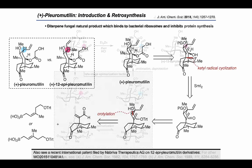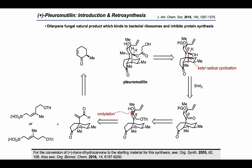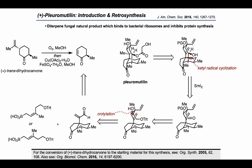Returning to the Reisman retrosynthetic analysis again, let's see how they finished simplifying their intermediate. They proposed that the six-membered ring at the core of their intermediate might arise from an alpha-methylated cyclohexenone, which it turns out can be accessed through a known procedure starting from trans-dihydrocarvone. So let's check out the forward synthesis.